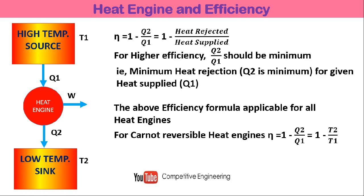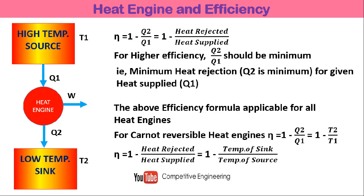In numerical problems, both heat quantities and temperatures of source and sink will be given. If it is a normal heat engine — not specified as a Carnot heat engine — you should use 1 minus Q2 by Q1. For a Carnot engine, whether you use 1 minus Q2 by Q1 or 1 minus T2 by T1, both give the same efficiency. For a normal heat engine, only 1 minus Q2 by Q1 applies. In objective-type questions, be careful to choose the correct formula based on engine type.